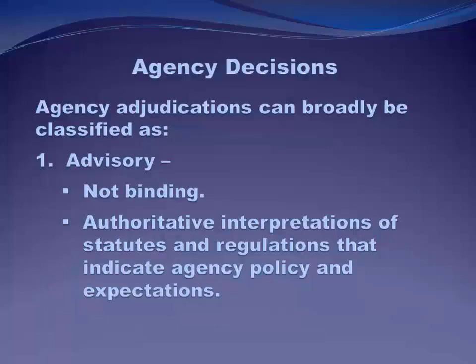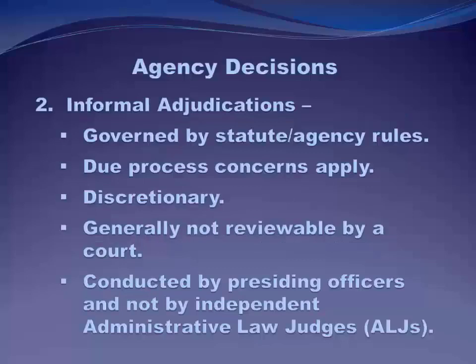Different agencies engage in different types of adjudications, which results in different types of agency rulings or agency decisions. At one end of the spectrum, agencies can issue advisory decisions, which attempt to explain or clarify a regulation or other agency policies. Two good examples are a no-action letter issued by the SEC and a private letter ruling issued by the IRS.